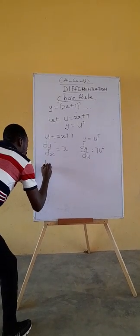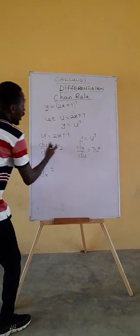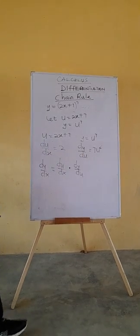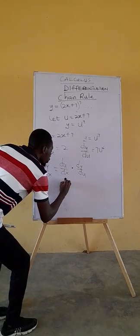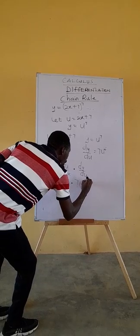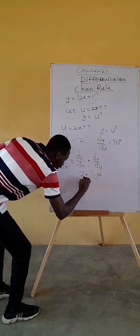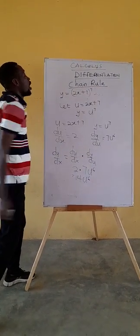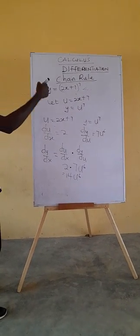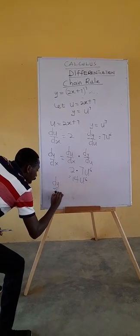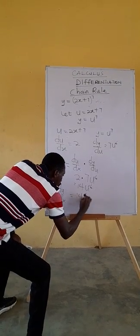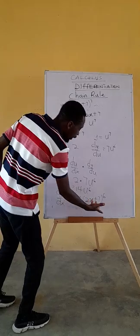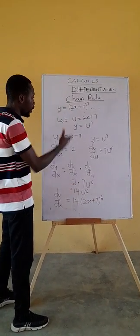Now how do we do that? To find dy/dx, the chain rule is saying that dy/dx is the product of the two derivatives. That's du/dx times dy/du. What's our du/dx? It's 2. Times what's our dy/du? 7u^6. Now we can multiply 2 by 7, that becomes 14u^6. However, u is not given in the initial question. So what do we do? We said u equals something, so we replace it. So dy/dx will be 14. In the place of u, we put (2x + 7)^6. Then this becomes the differential function or the derivative of this.